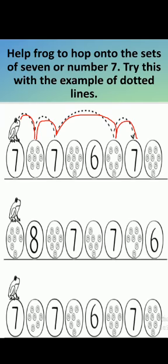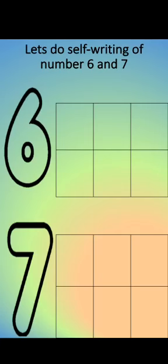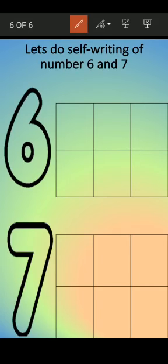Now let's see another question. Let's do self-writing of number 6 and 7. How are we going to do it? Let's do this first inside the bubble. Come down and down. Take a turn. Go up. Then close. Number 6.